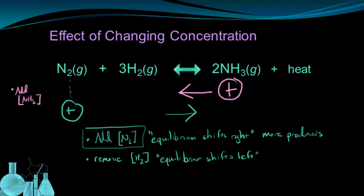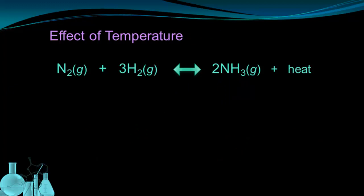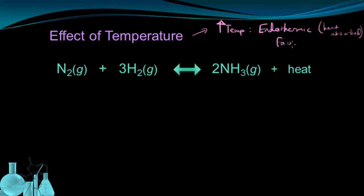This method works not only with concentration changes, but also when considering the effect of temperature on equilibrium. The effect of temperature differs for endothermic and exothermic reactions: if temperature goes up, the endothermic direction is favored — the direction where heat is absorbed is favored. An increase in temperature always results in a shift in the direction of the endothermic process, because you're providing more energy. Reversible reactions are endothermic in one direction and exothermic in the other.